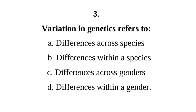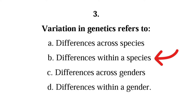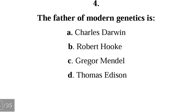Number three: variation in genetics refers to — A) differences across species, B) differences within a species, C) differences across genders, D) differences within a gender. The correct answer is B — variation refers to differences that occur within individuals of the same species.